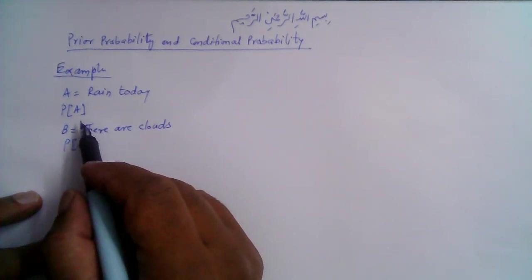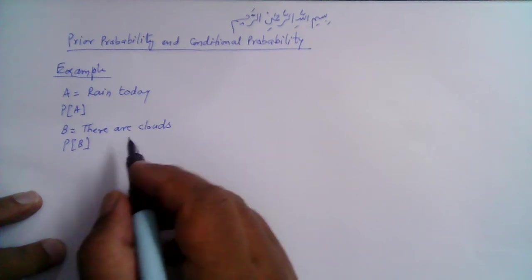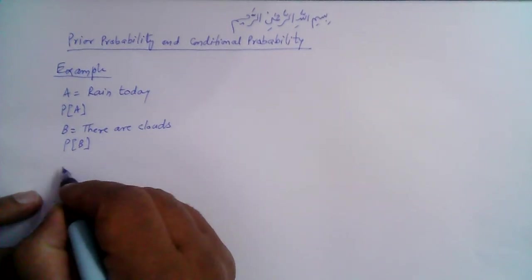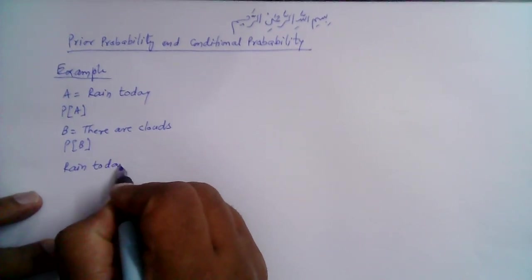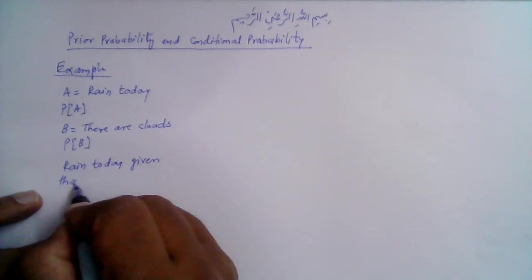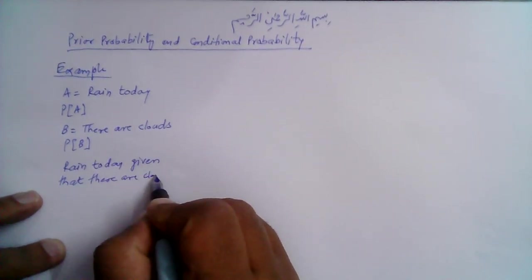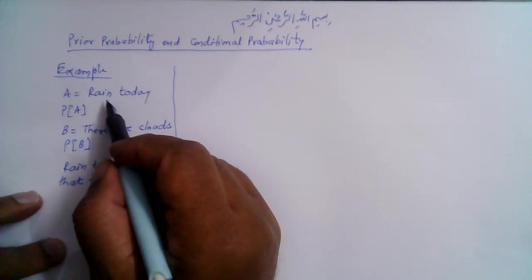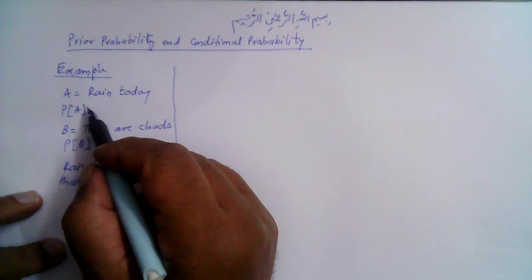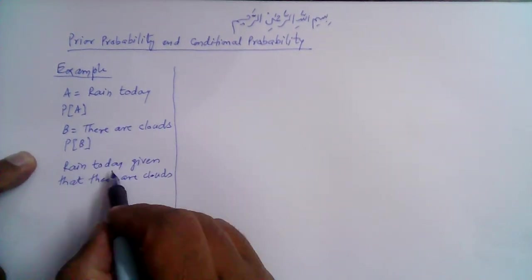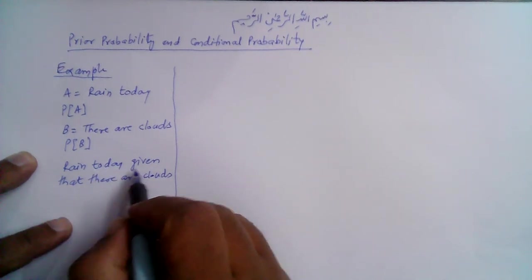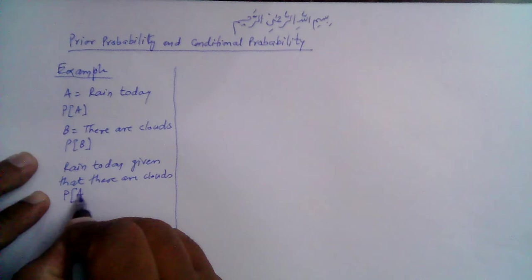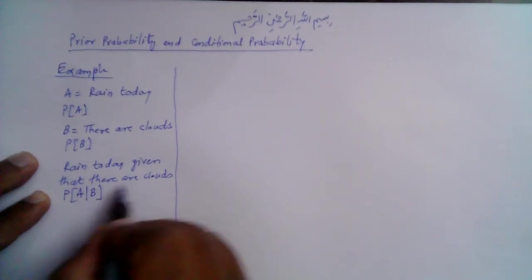Now consider another situation where we are asked to find the probability given the information that there are clouds. So we investigate the event: rain today, given that there are clouds. This probability is different from the probability of rain today without any related information. When calculating this, we are given that there are clouds, so we have related information available. We denote this probability as P(A|B), where B is 'there are clouds' and A is 'rain today'.